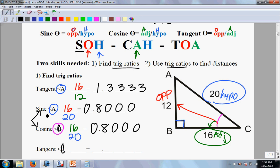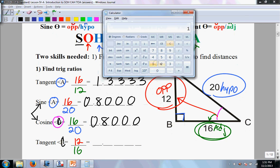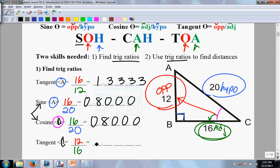Now tangent is opposite over adjacent, and we're doing tangent of angle C. So our opposite now is 12, our adjacent is 16. So we divide 12 divided by 16, we get 0.75.